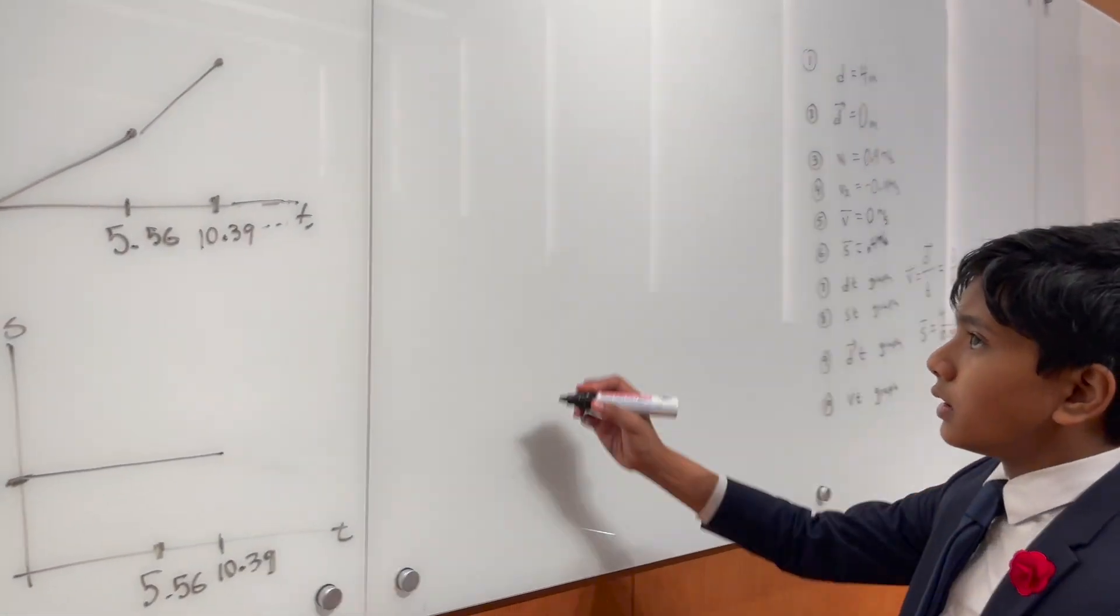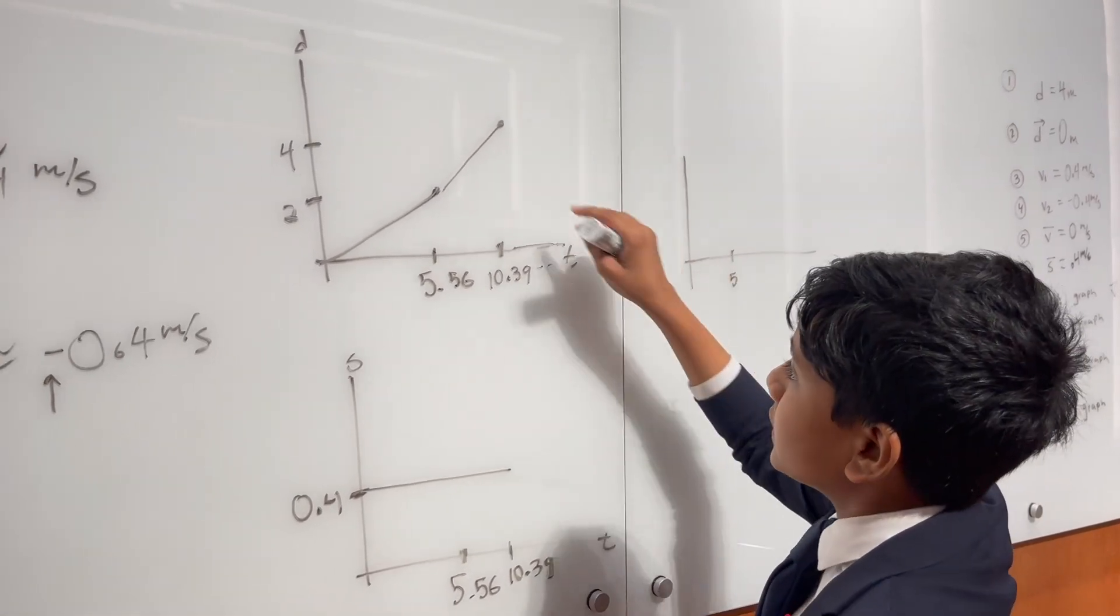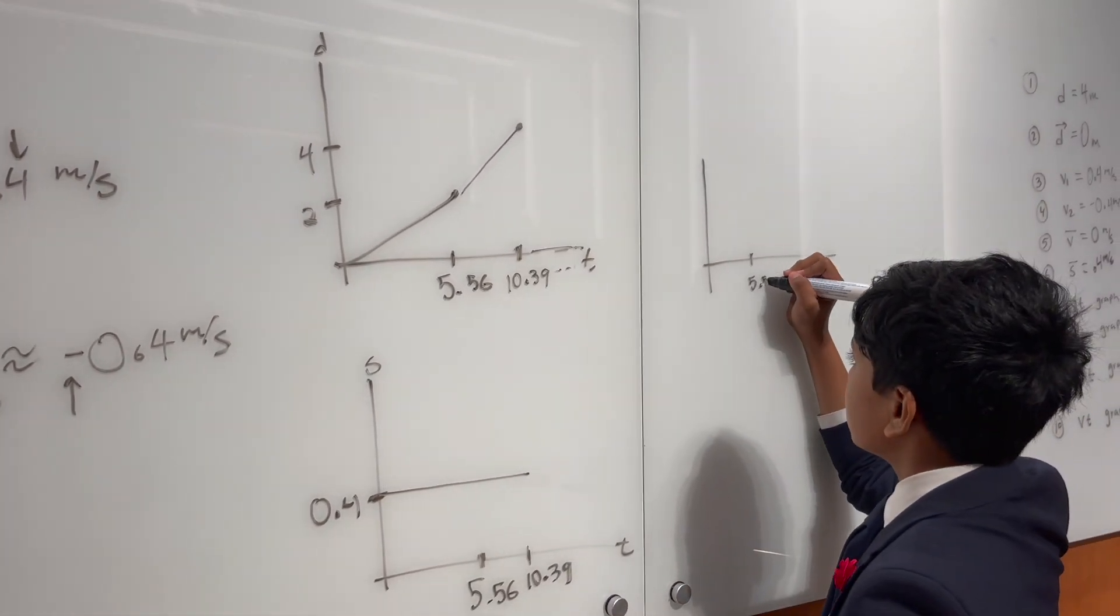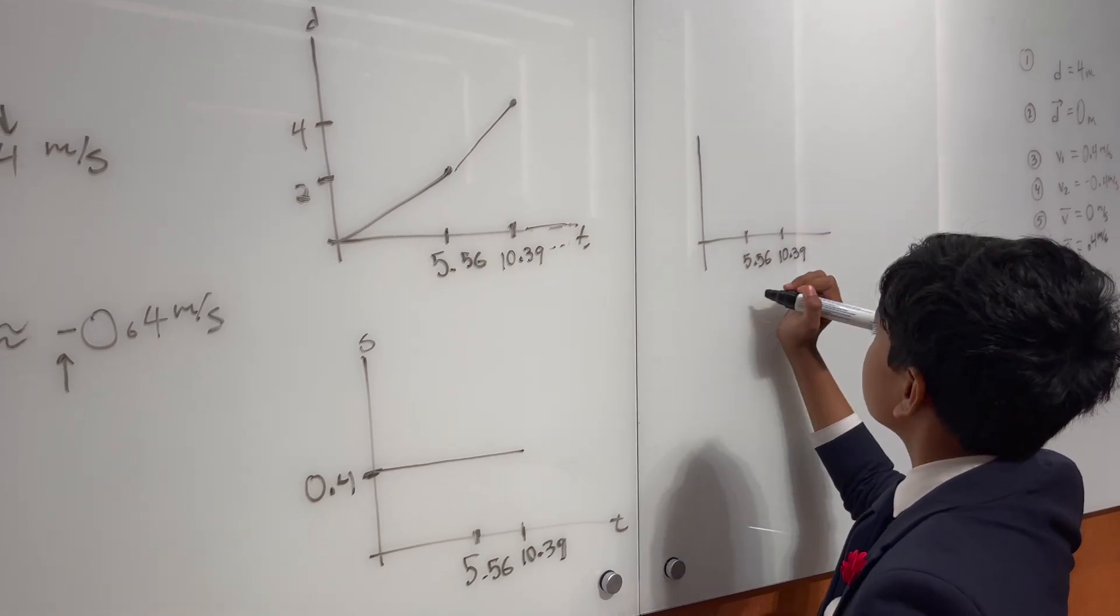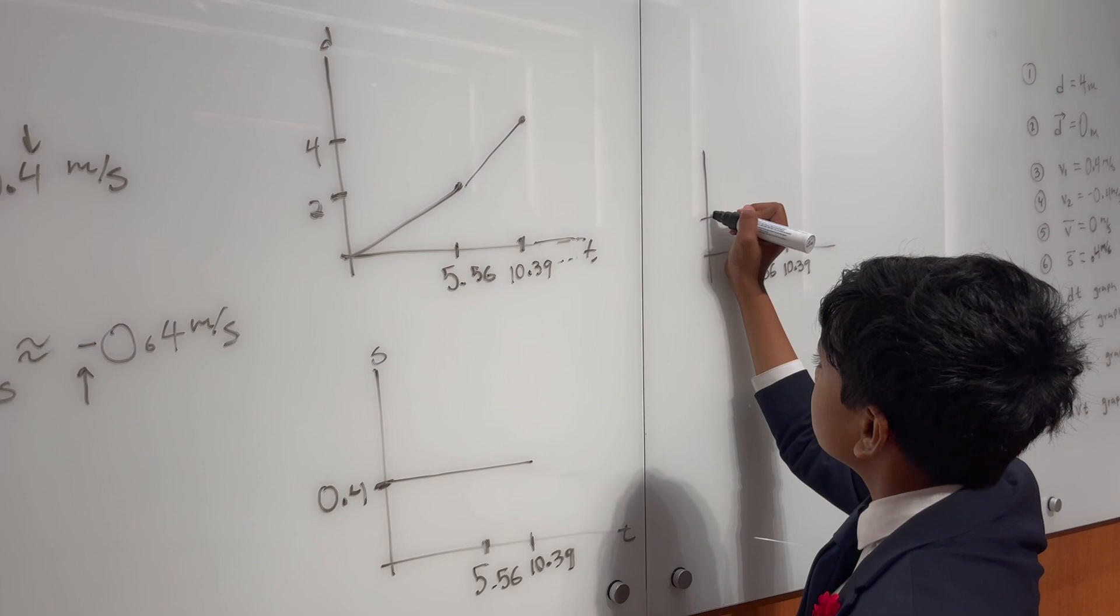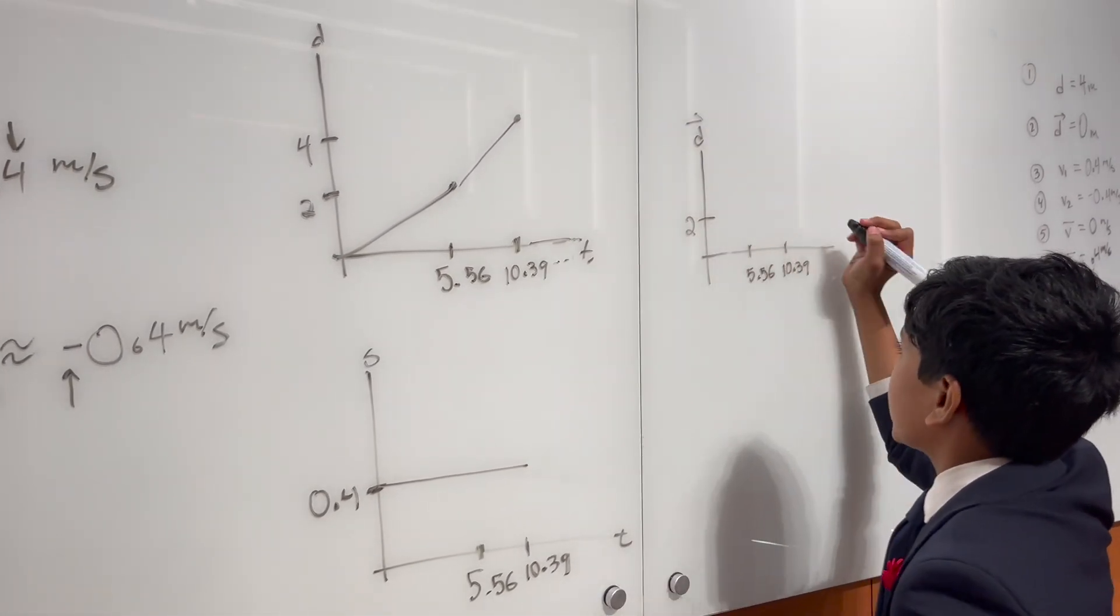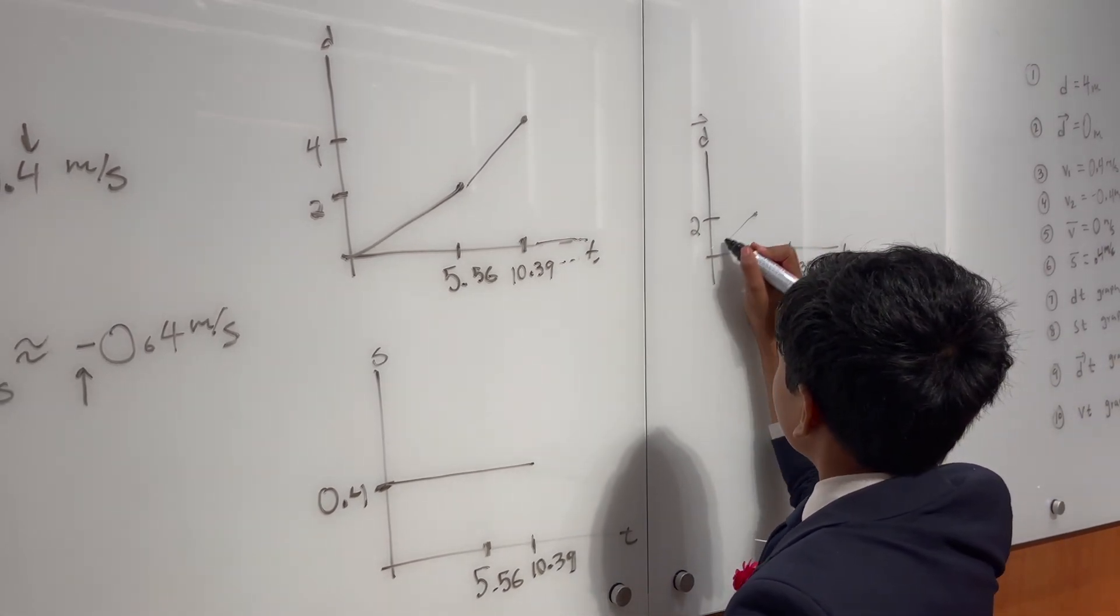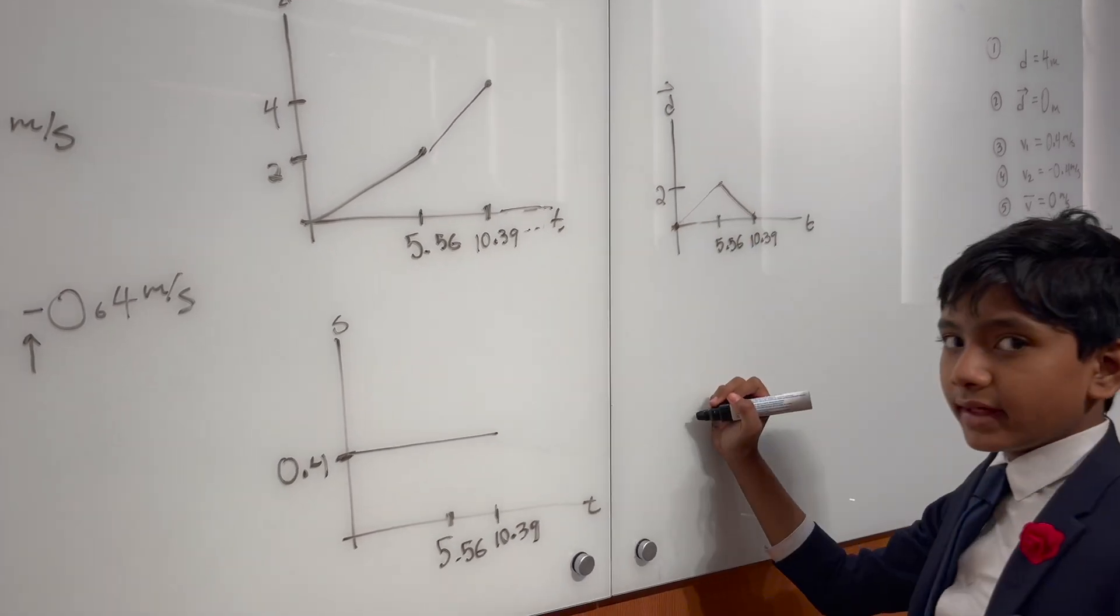So, now, for our displacement over time graph, we do essentially the same thing, but this latter half is pointing downwards instead. So, we have 5.56, 10.39, then we have 2, and, oh, let's label our axes. And then, we just have this, and then it starts going down.